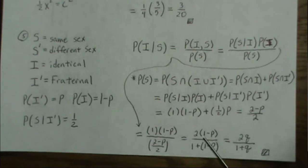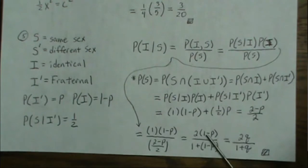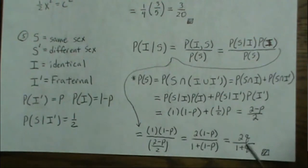Notice that Q is one minus P, so the answer is 2Q over (1 + Q).